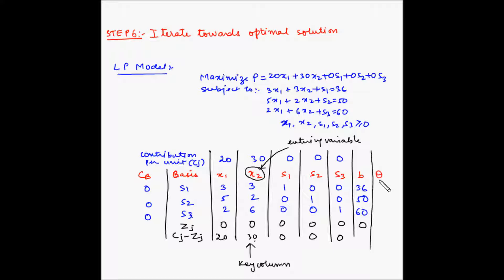Theta is found by dividing the values in column B by the corresponding values in the key column, and this theta is known as the replacement ratio column. So, 36 divided by 3 is 12, 50 divided by 2 is 25, and 60 divided by 6 is 10.